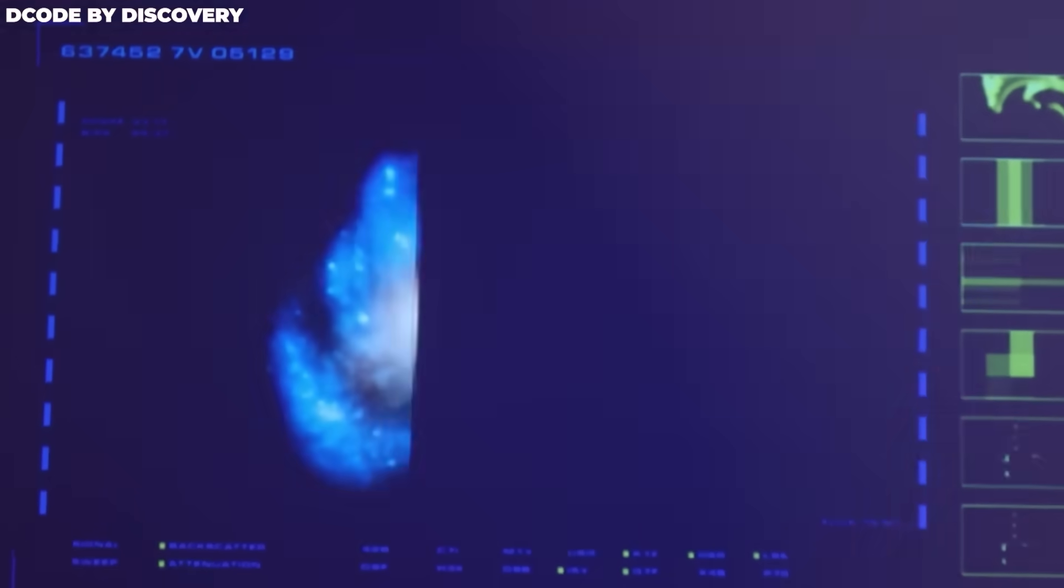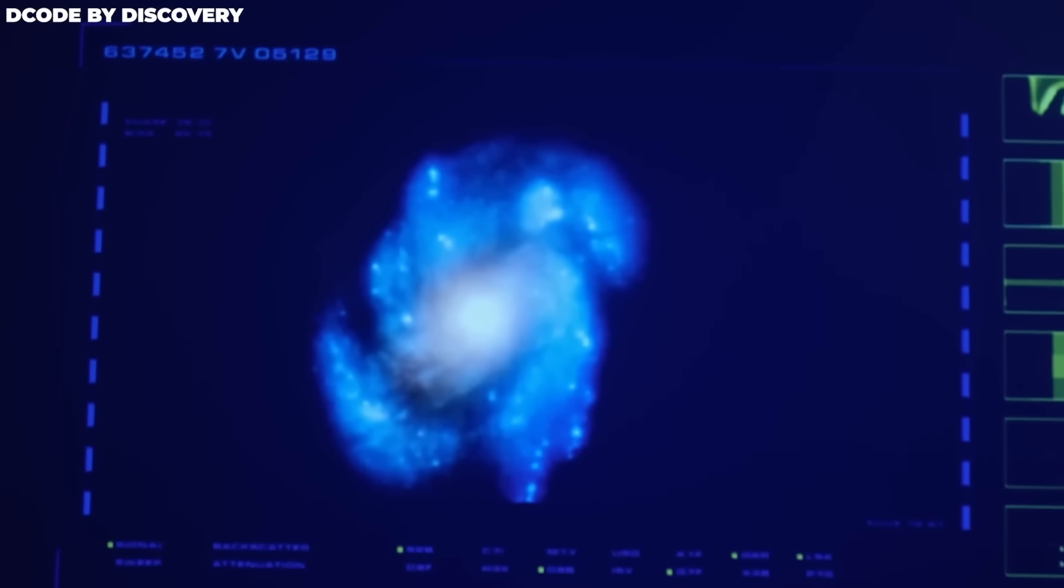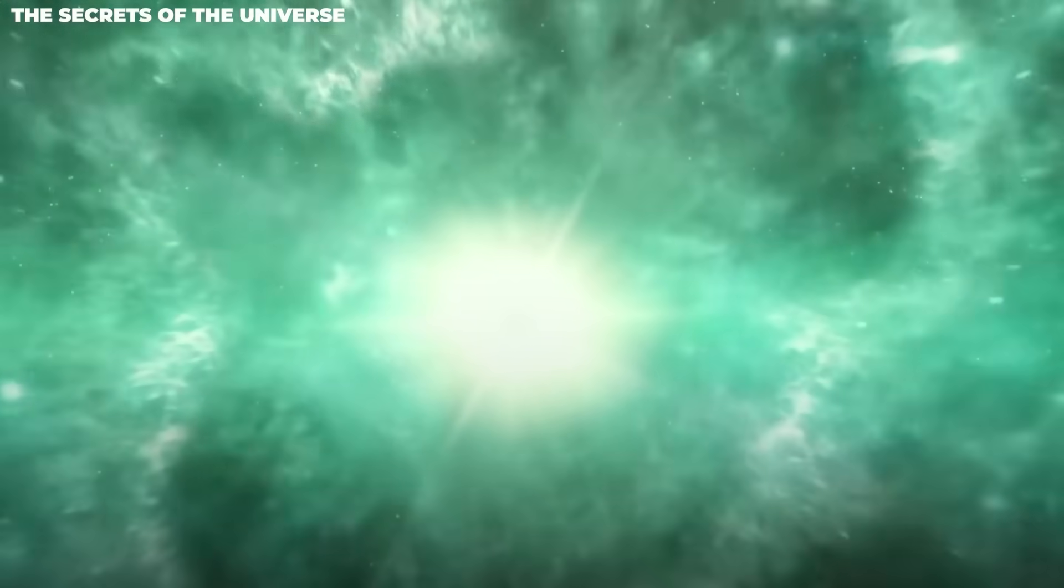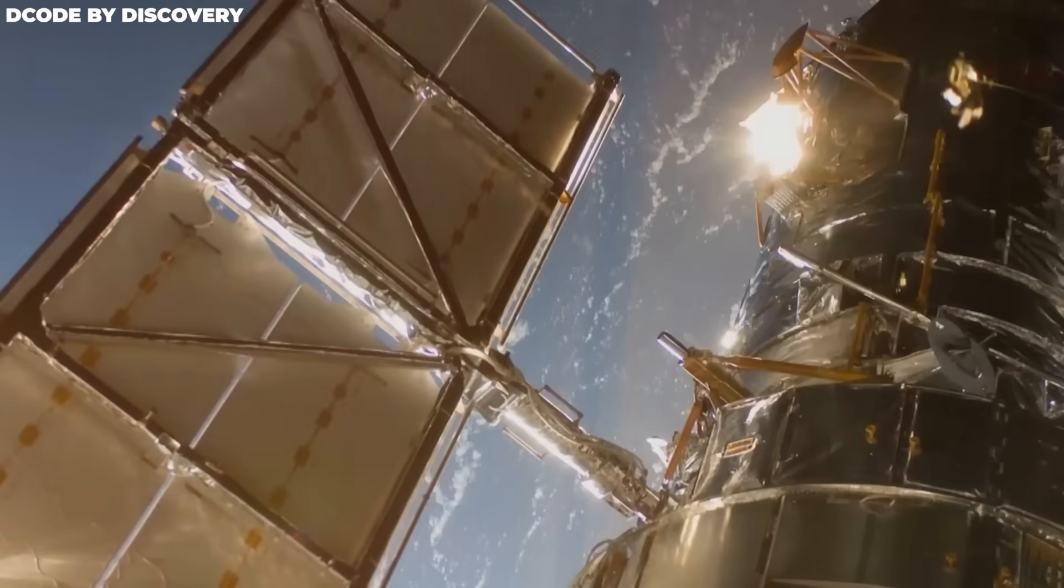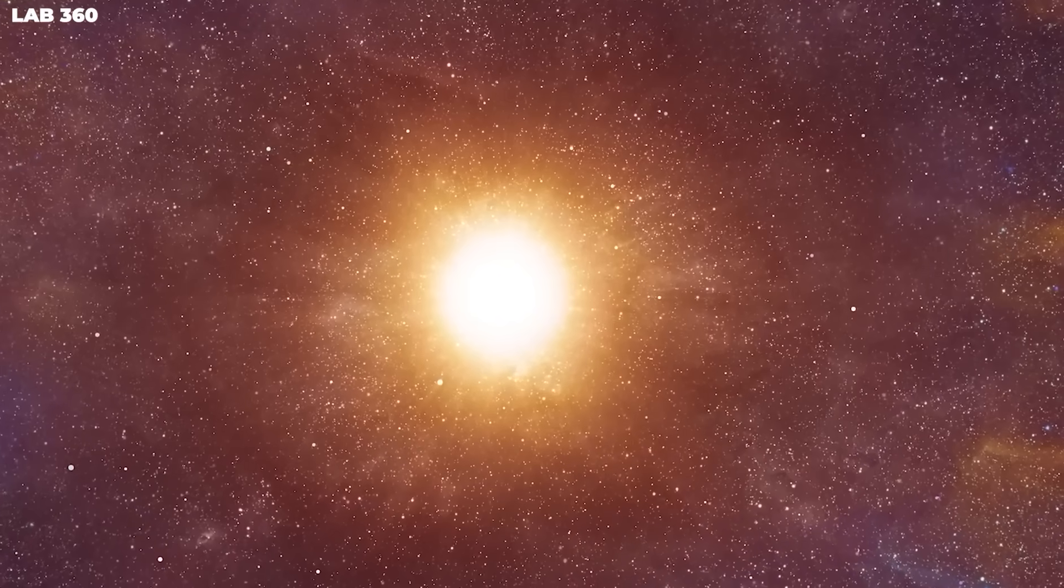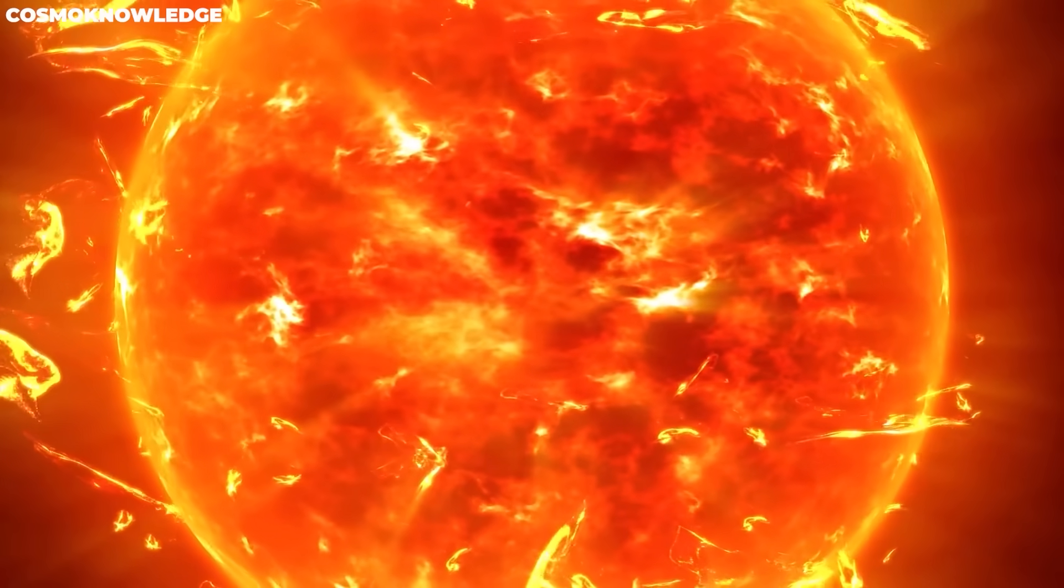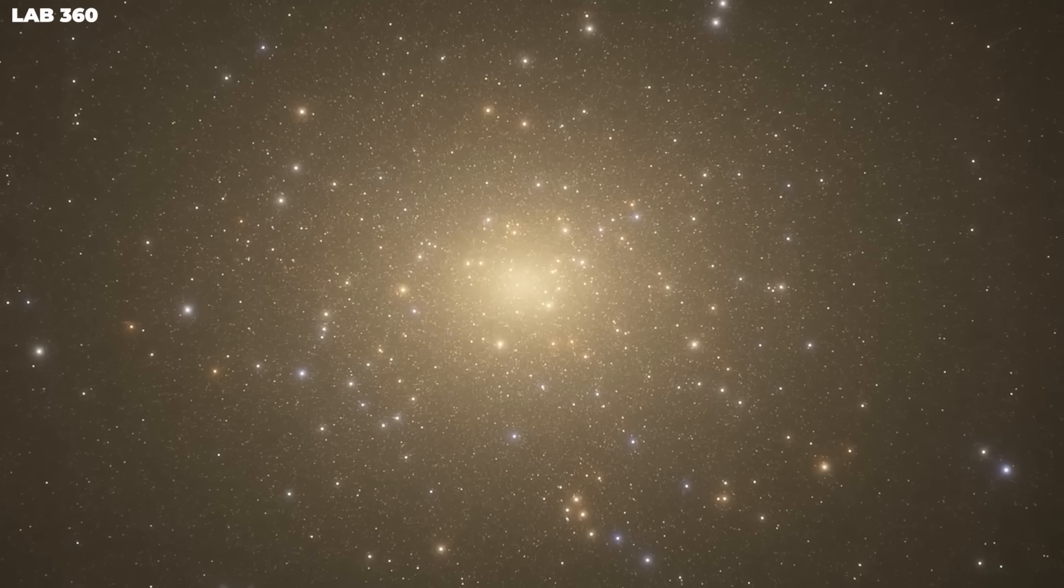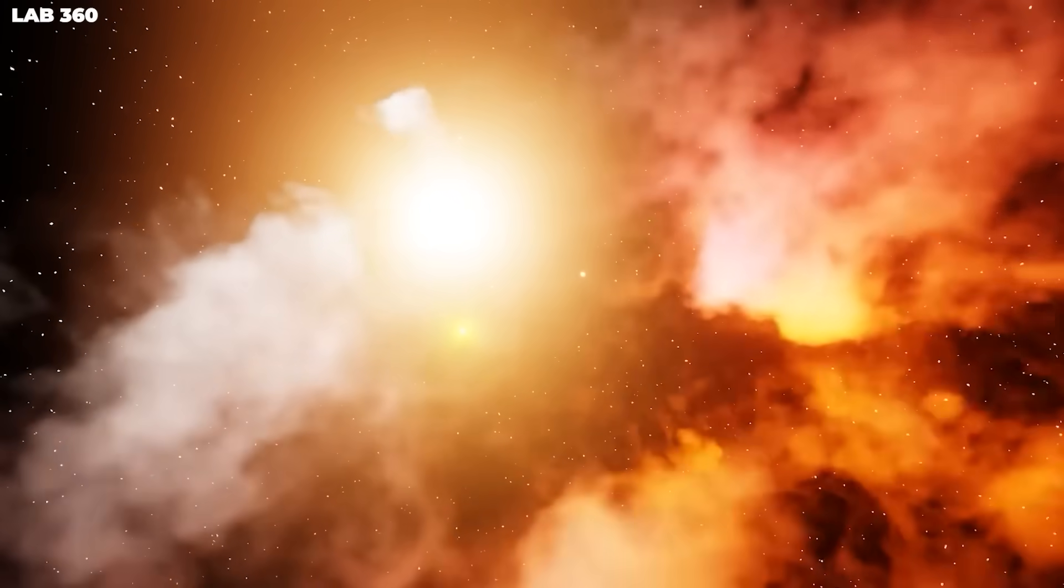One of the tools used to look at Betelgeuse and try to figure out what caused the huge dimming event was the Hubble Space Telescope. The studies done with this camera were sure to amaze everyone because they showed a different reason for the dimming besides the star possibly being about to go supernova. Scientists learned from the Hubble Space Telescope that the Great Dimming was caused by a large amount of hot matter being thrown off the surface of Betelgeuse. Because this release was so big, it made a cloud of dust that blocked the star's light and made it look like it was fading.